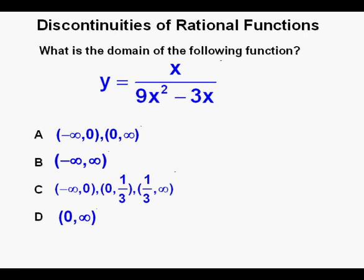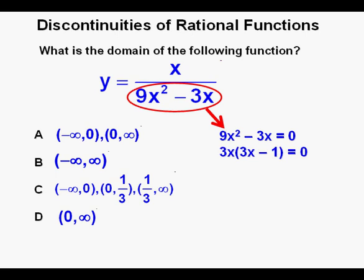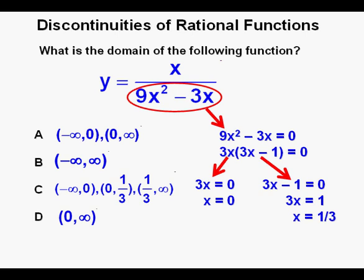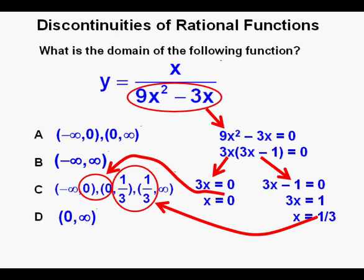Next problem: what is the domain of the function y equals x over 9x squared minus 3x? We need to find the values of x that make the denominator equal to 0. Setting up 9x squared minus 3x equals 0, we factor out 3x to get 3x times quantity 3x minus 1 equals 0. Splitting into two equations: 3x equals 0 gives x equals 0, and 3x minus 1 equals 0 gives x equals 1 third. Both 0 and 1 third are excluded, so answer C looks correct.